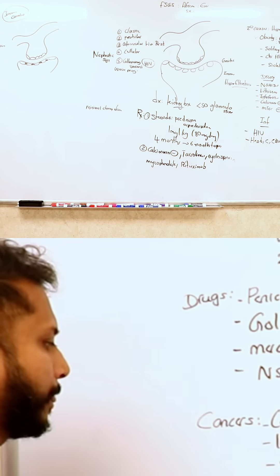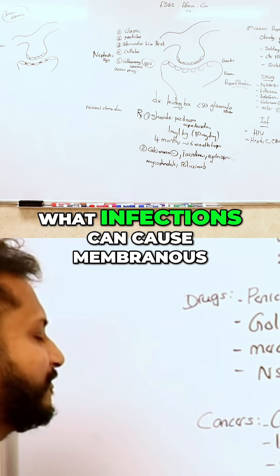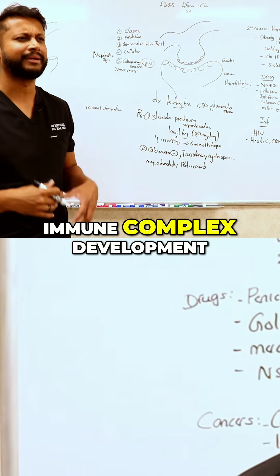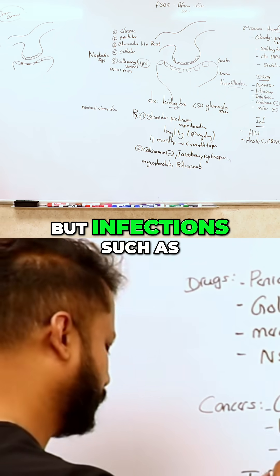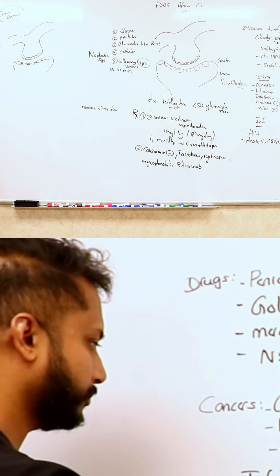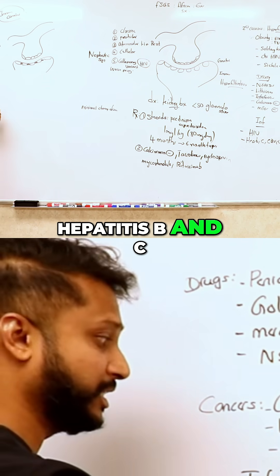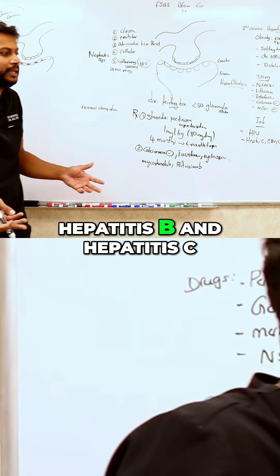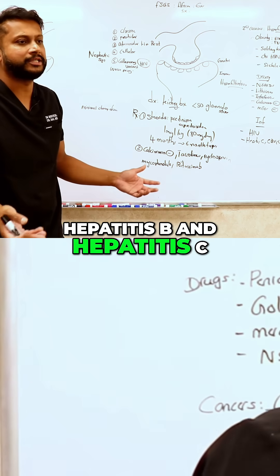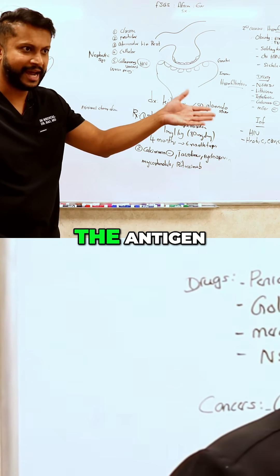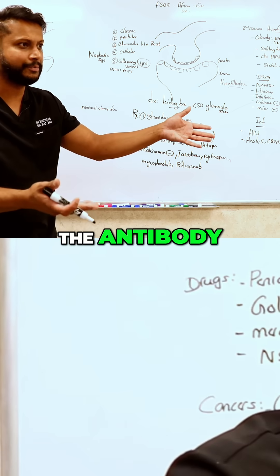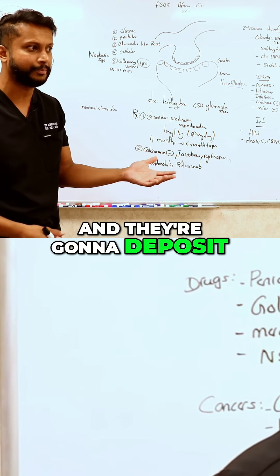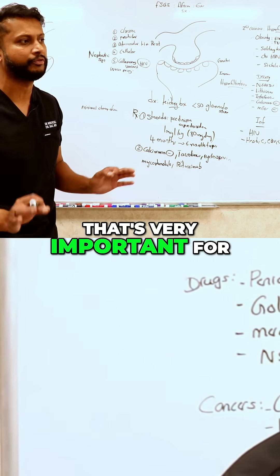What about infections? What infections can cause membranous immune complex development? Infections such as hepatitis B and C. When you have hepatitis B and hepatitis C, what do you check for in the blood? The antigen, the antibody. If you have an antigen and antibody, you form immune complexes and they're going to deposit. That's very important for you to know.